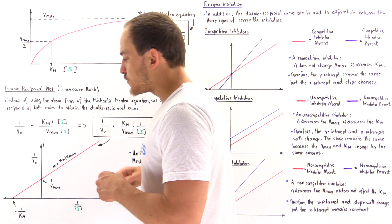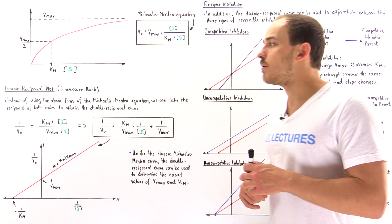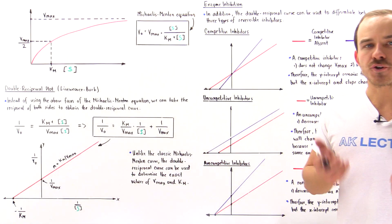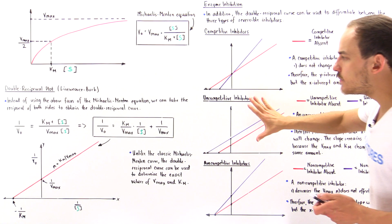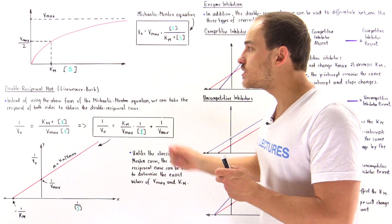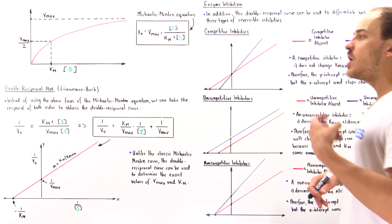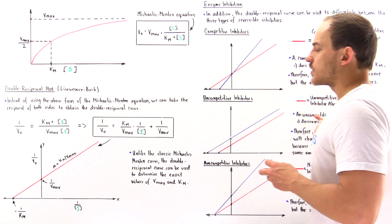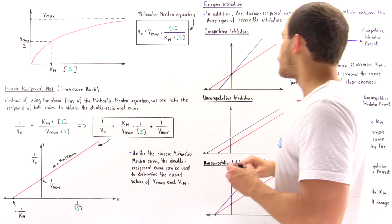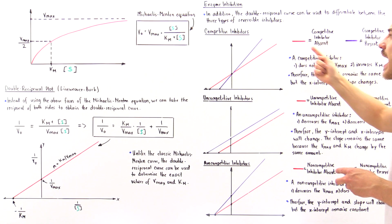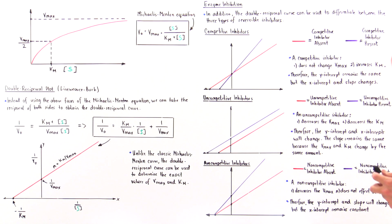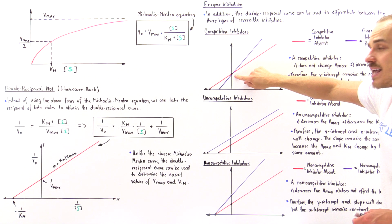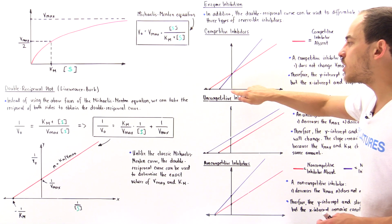In addition to this usefulness, there is one other important application of the double reciprocal plot: we can use it to differentiate between the three different types of reversible inhibitors — competitive, uncompetitive, and non-competitive. Let's begin with how a competitive inhibitor affects the double reciprocal curve. The red curve describes the curve in the absence of the competitive inhibitor, and the purple curve describes the curve in its presence. In the presence of the inhibitor, the slope is greater, the y-intercept is the same, and the x-intercept is less negative — closer to the origin.